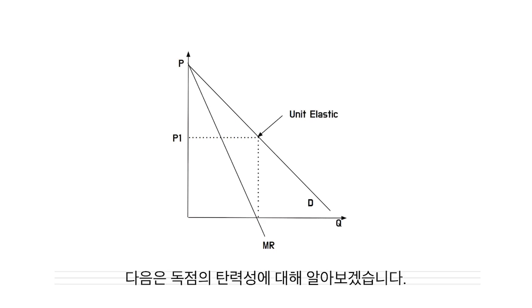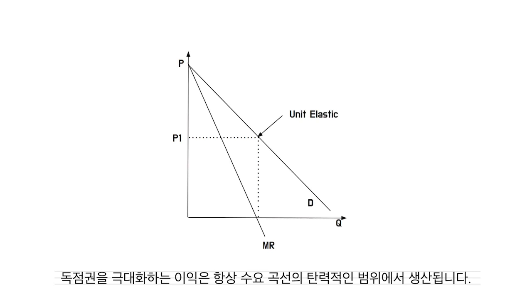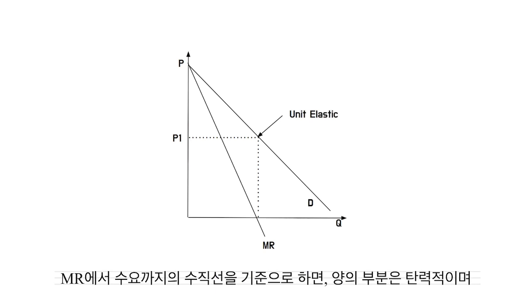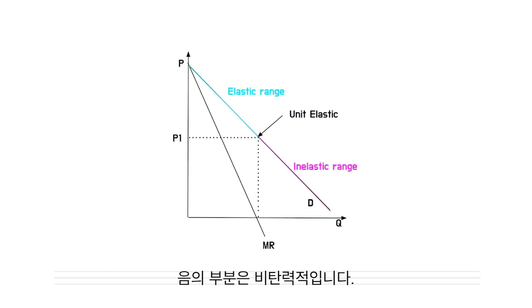Now, here is the elastic and inelastic range of Monopoly. A profit-maximizing Monopoly will always produce in the elastic range of the demand curve. Putting the vertical line from MR to the demand as a standard, the positive part might be the elastic range, and the negative part would be the inelastic range.